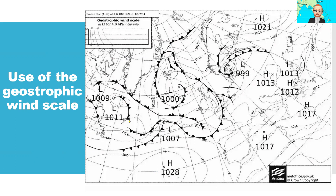We can also see in this chart that we have low and high pressure systems, but we do not have the direction the low pressure will move, and we do not have the wind speed. The direction can be seen by the cross — meaning from here to here the low pressure will move — but the wind speed is not known.